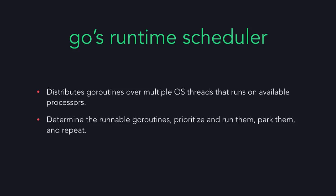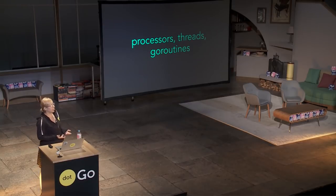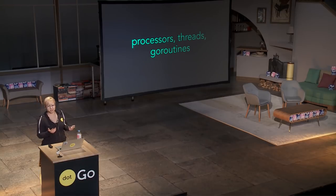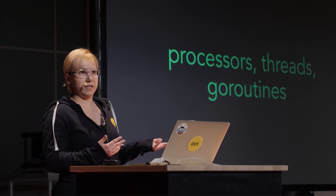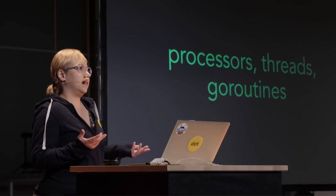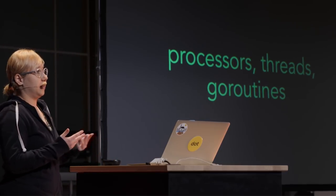In the most basic terms, it prioritizes and runs the runnable Go routines, parks them if needed — for example, if they are blocked — and repeats the cycle again and again. Before diving into the details, let me clarify the main actors. We will talk about processors, threads, and Go routines throughout this talk. Processors are the CPU cores — the actual processing power we have on board. Threads are the native OS threads; in Go we don't deal with OS threads directly, but it happens internally at the runtime. Everything runs on a native OS thread in the end. Go routines are the lightweight threads we use daily, managed by the runtime.